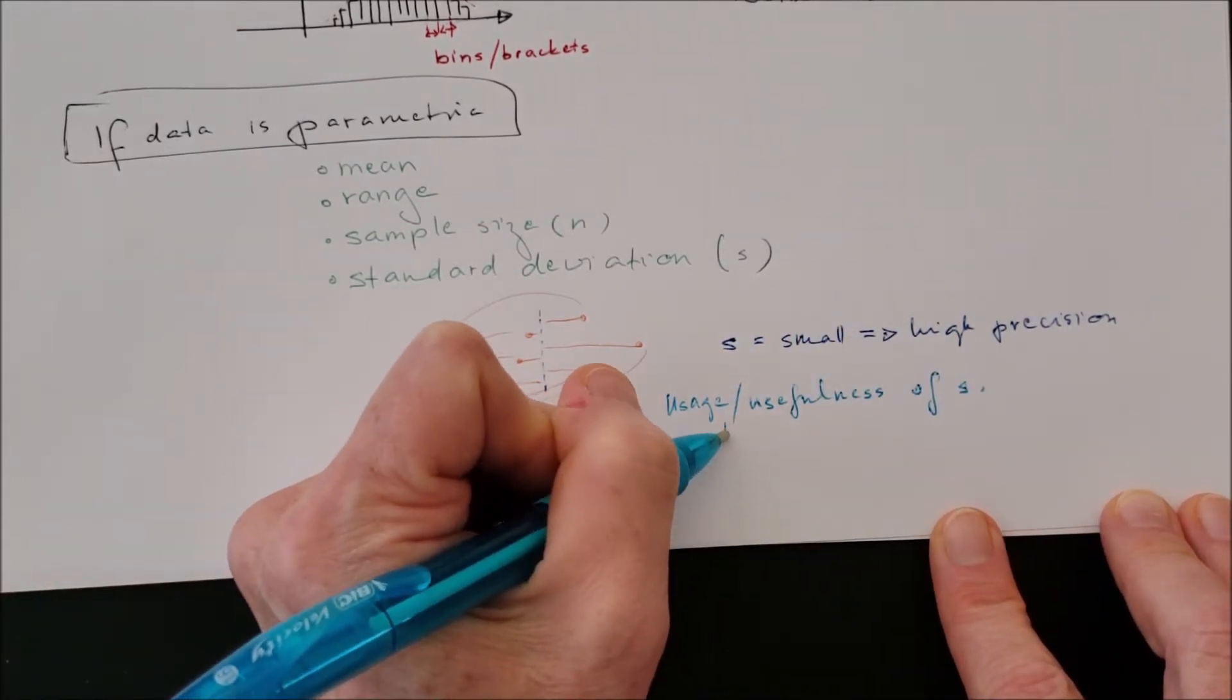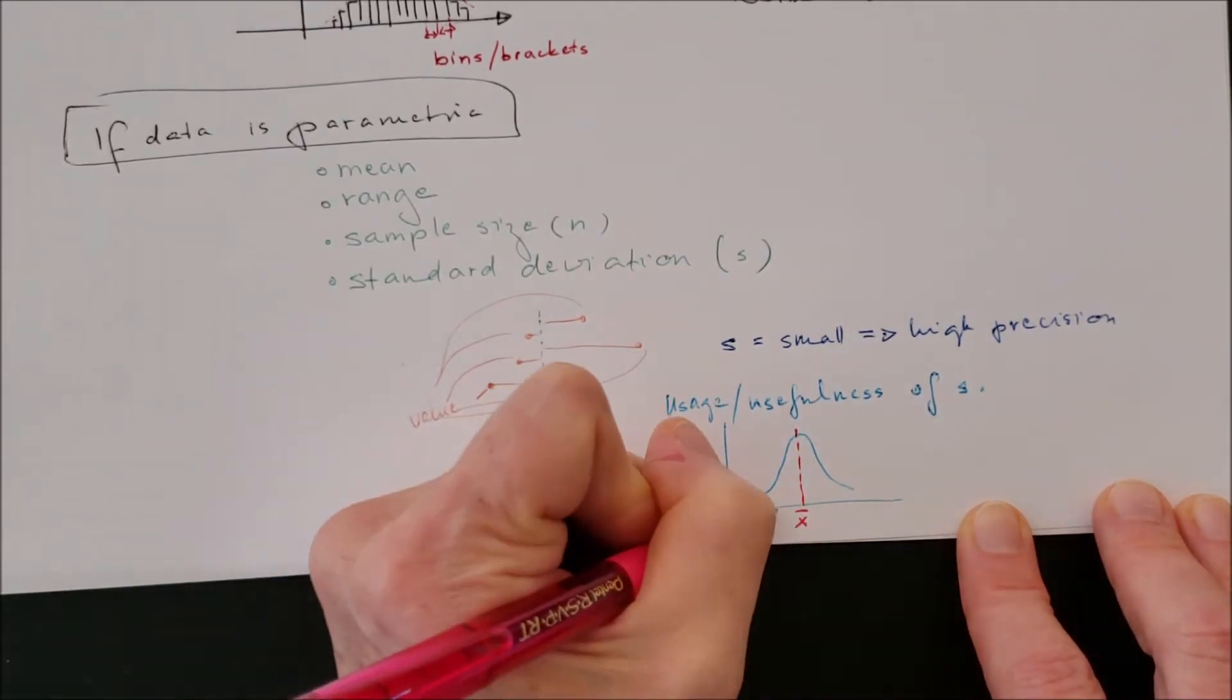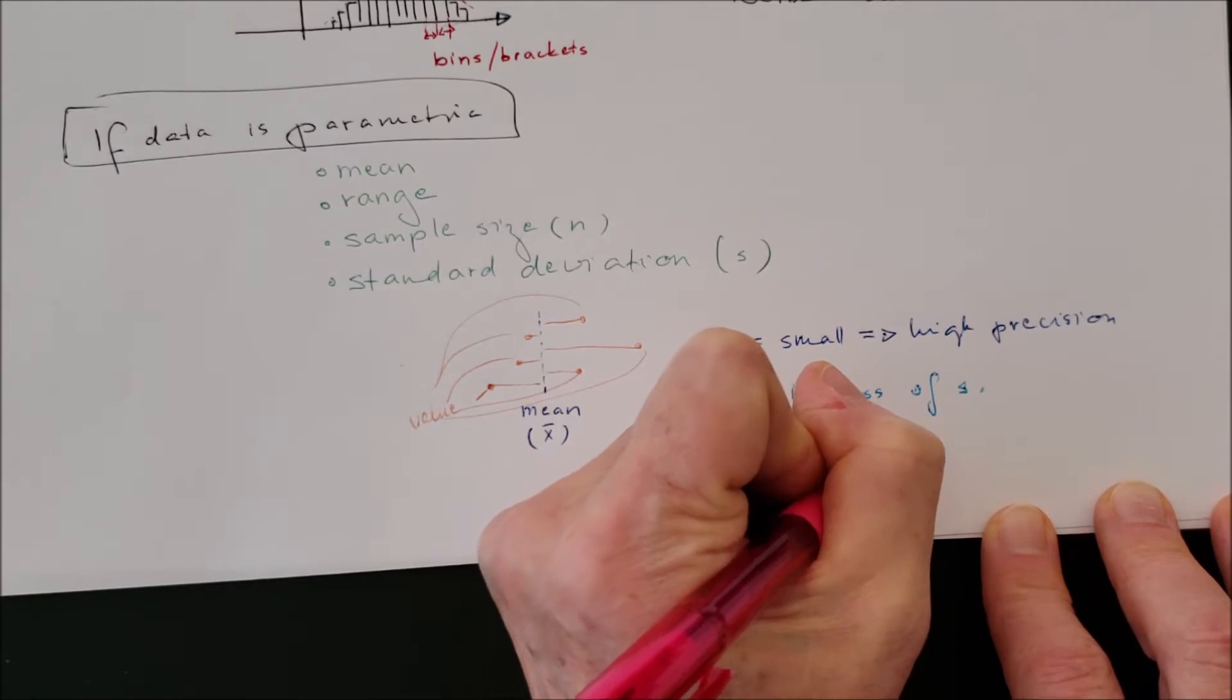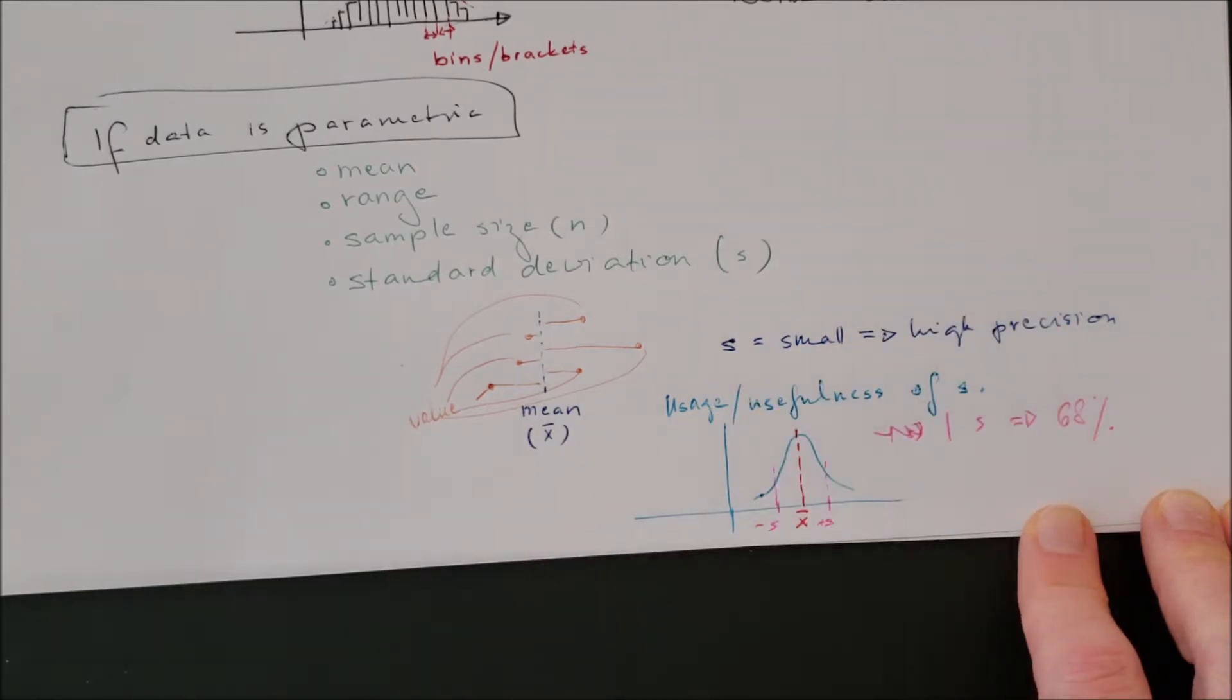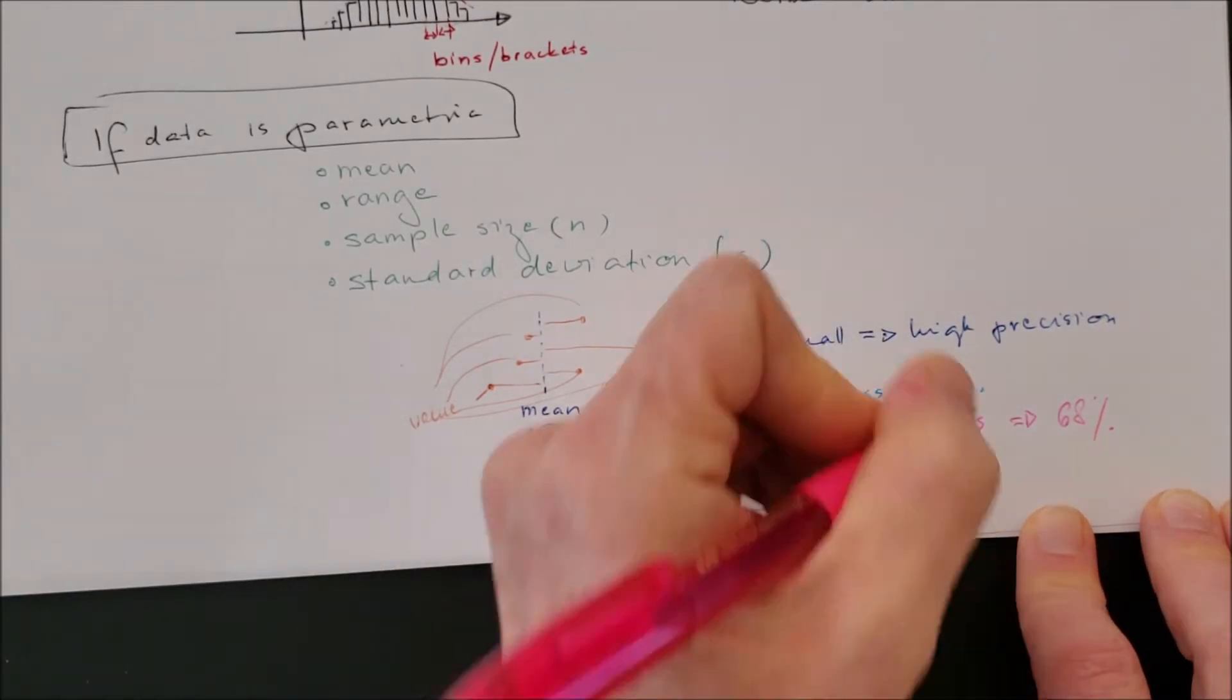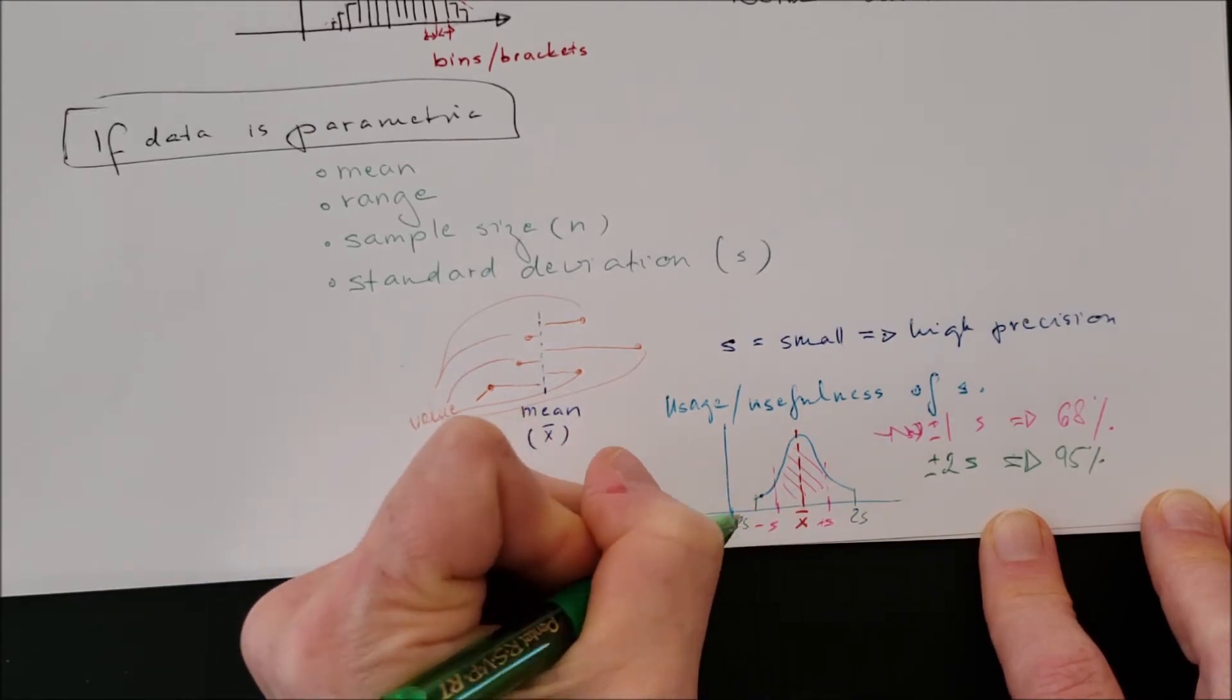So the usefulness of the standard deviation. If I have plus minus one standard deviation from my sample mean, that means 68% of the values will be between these values, between one standard deviation plus minus from the mean. If I want to be 95% confident that all of my values will be in that range, I have to take two plus minus standard deviation from the mean.